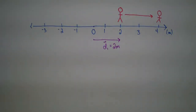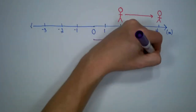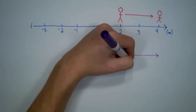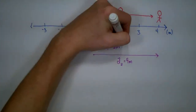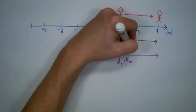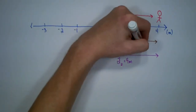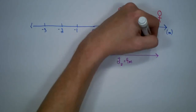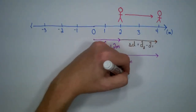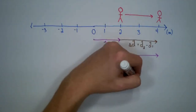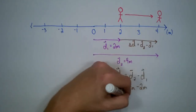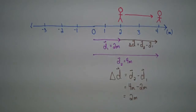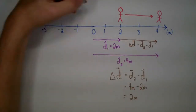At some point, our person walks over to four meters. We can now define a new position vector because they've changed their position. This is going to be d2, and it is going to be four meters, also positive. We can look at the difference between those two positions — we call this the displacement, delta d, which is d2 minus d1. So delta d equals four meters minus two meters, which means they've walked two meters, and because it's positive, two meters to the right.